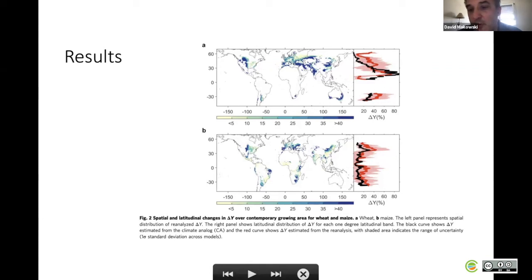On the right part of the graphic, you have different curves. The black curve corresponds to the result of the first approach based on climate analogues. The red part corresponds to the Bayesian model averaging technique. The pink shaded area shows the range of variability provided by the 10 crop models.